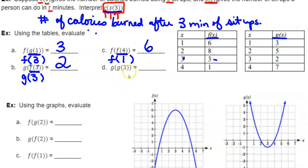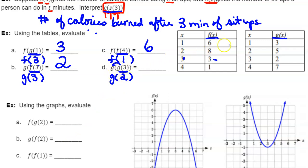For g of g of 3, I go on the inside first. When x equals 3 in the g function, the matching y value is 2. So g of 3 equals 2. Now take the x value of 2 and plug it into the g function. When x equals 2, the g function kicks out a 5. Therefore, the whole composition g of g of 3 is equal to 5.